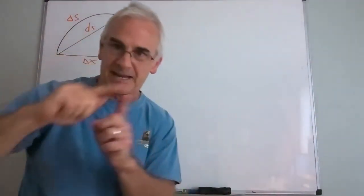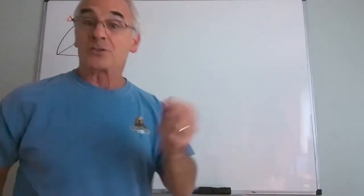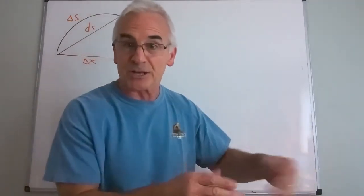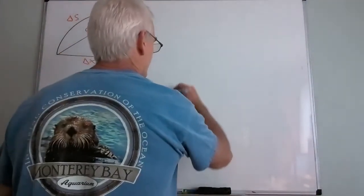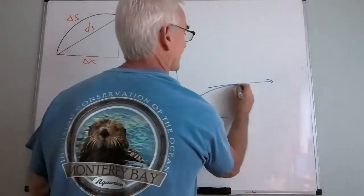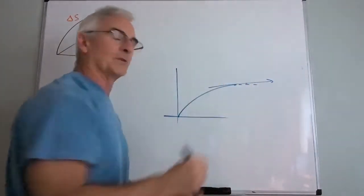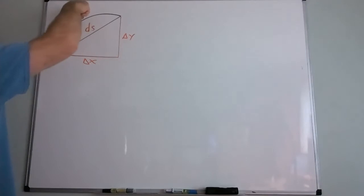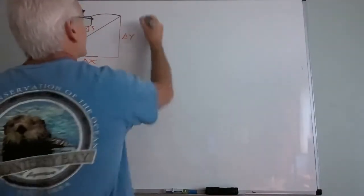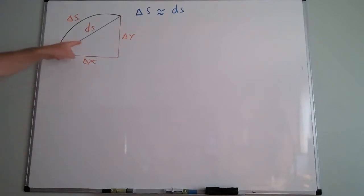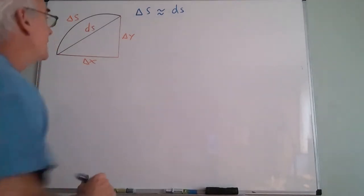Remember when we did tangent line estimators: we used dy to estimate Δy. Delta y was the actual change; dy was our estimated change. So I'm going to use ds to estimate Δs. Δs will be estimated by ds — they cannot be equal, but if Δx and Δy are small enough, they'll be very close.